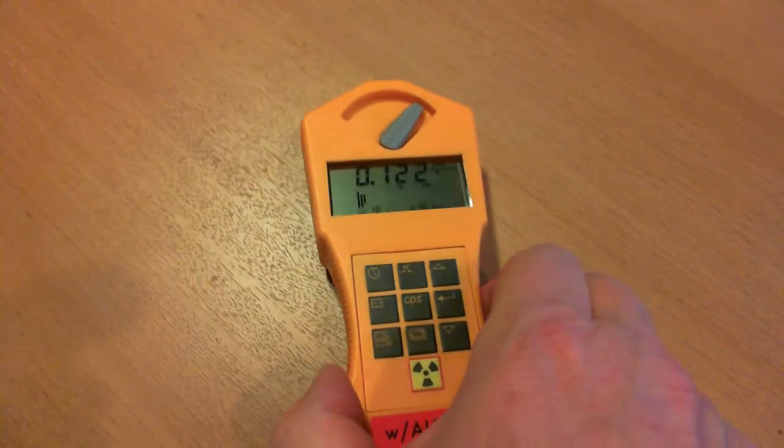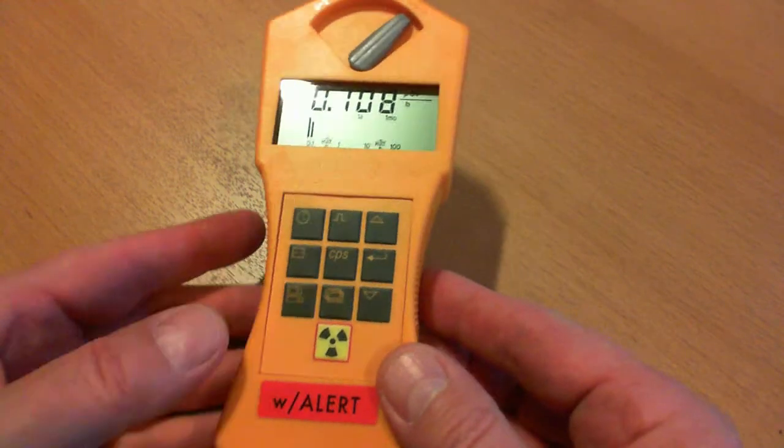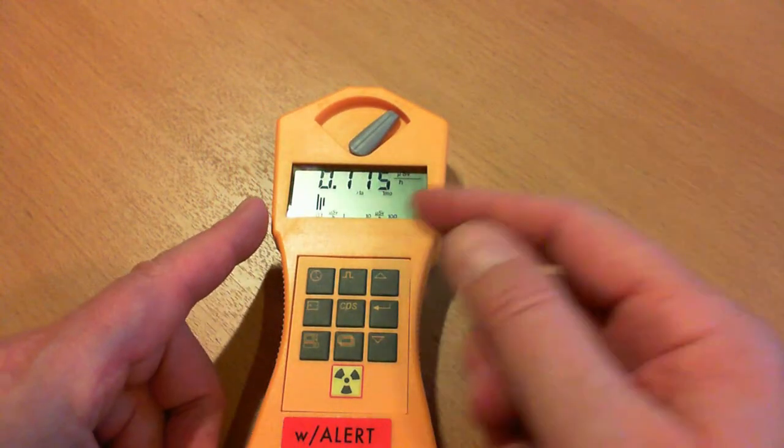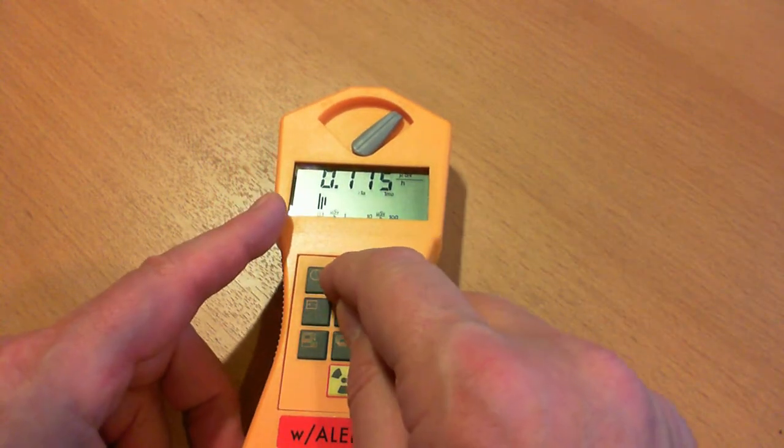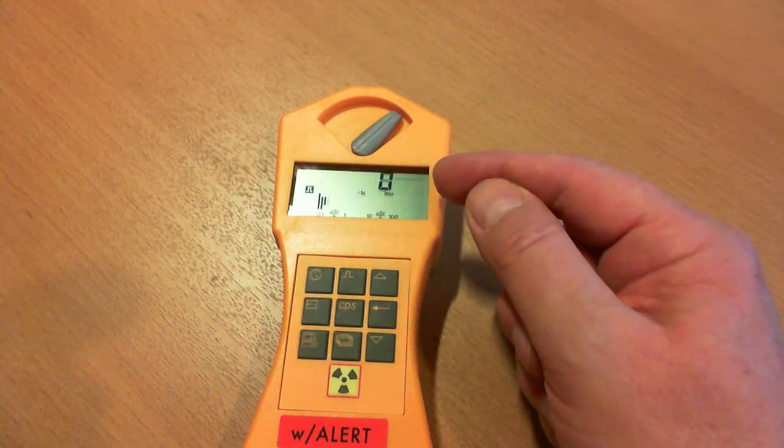There are different measuring types. I can, for example, use the device as a normal Geiger counter, as an impulse counter. Then I can see here, as usual, every single impulse as a count.